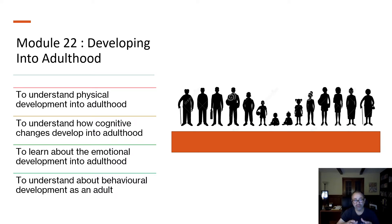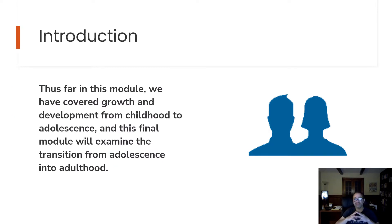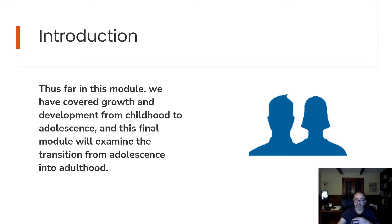In this module, we will be looking at the understanding of physical development into adulthood, how cognitive changes develop into adulthood, emotional development into adulthood, and also understanding the behavioral part of development as an adult. We have covered growth and development from childhood to adolescence, and this final module will examine the transition from adolescence into adulthood.